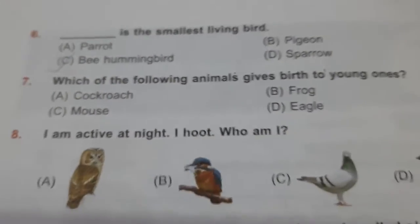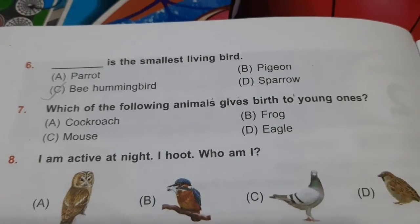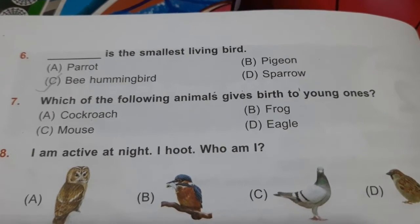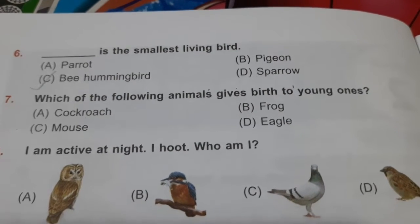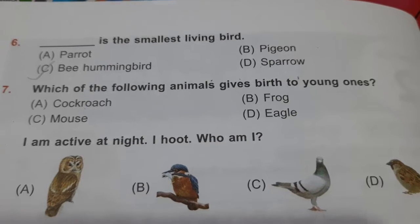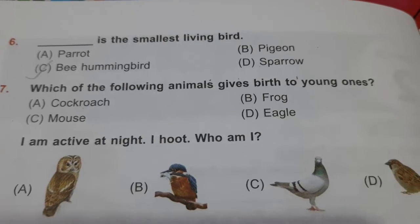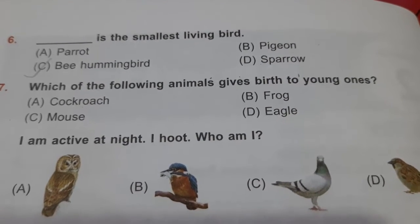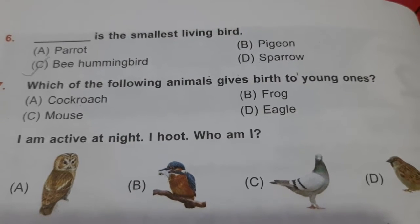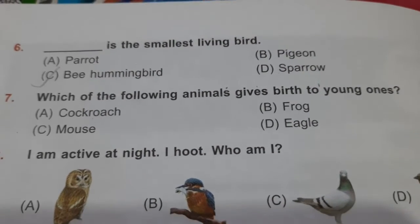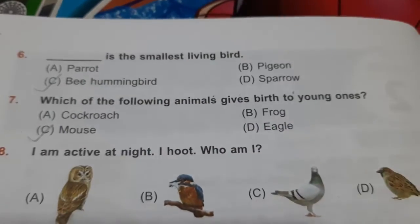Which of the following animals give birth to young ones — meaning they don't lay eggs? Cockroach lays eggs. Frog, yes — lays eggs. Eagle as well. And mouse is the one which gives birth to young ones. So option C is the answer. Please tick it.